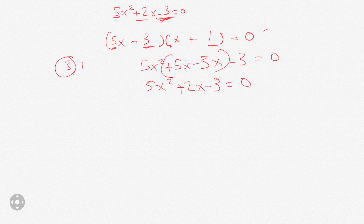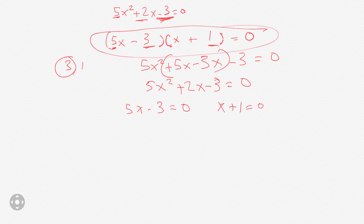Now we go back and set each factor to 0. We get 5x minus 3 equals 0 and x plus 1 equals 0. For 5x minus 3 equals 0, we add 3 to each side to get 5x equals 3, so x equals 3 fifths. And for the other one, we subtract 1 from each side to get x equals negative 1. Those are the two answers.